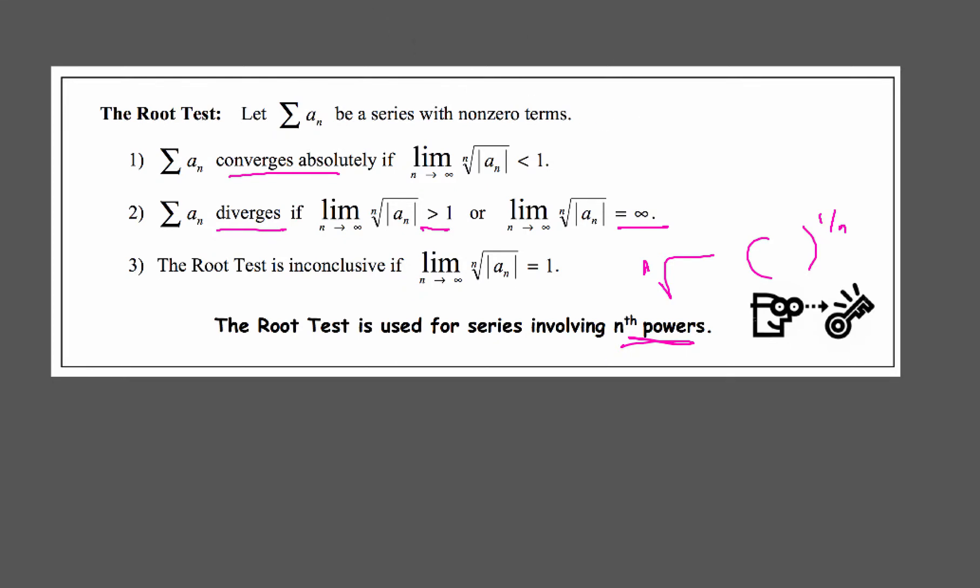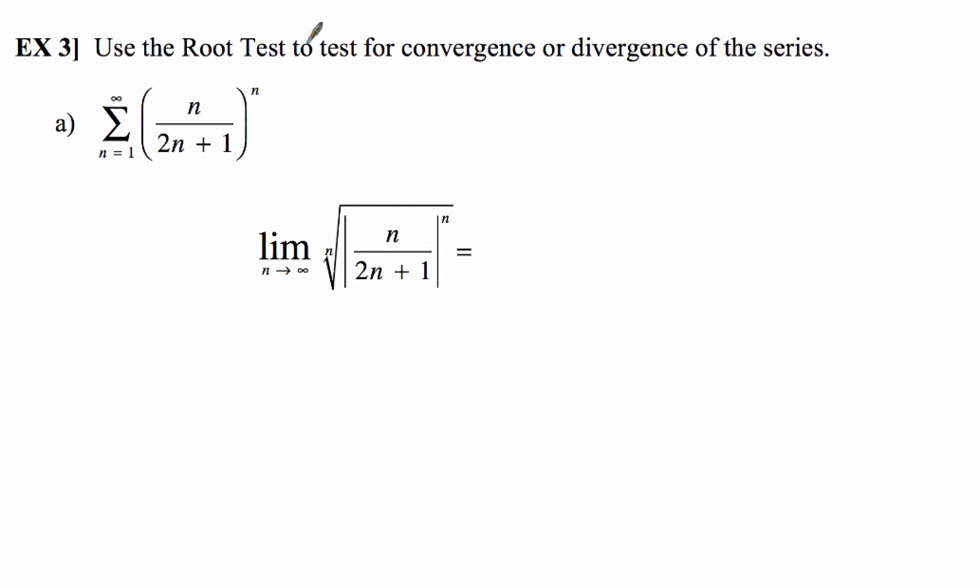All right, so here we go with example number 3. Now, notice in our example here, we've got something to the nth power right there. So we're going to go ahead and use the limit process to figure out what's going on with this thing. Does it converge or diverge, or does it just plain old inconclusive?